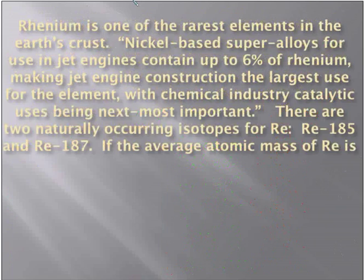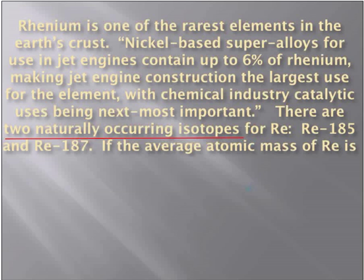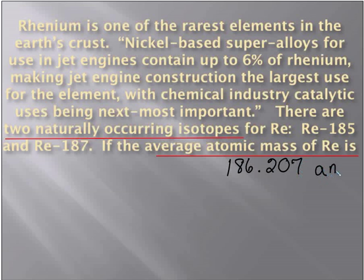Now, what if instead of the atomic mass for the periodic table, the unknown was our percent abundance? Rhenium has two naturally occurring isotopes. The average atomic mass is 186.207 atomic mass units. There are two isotopes: Re-185, whose actual isotope mass is 184.953, and Re-187.